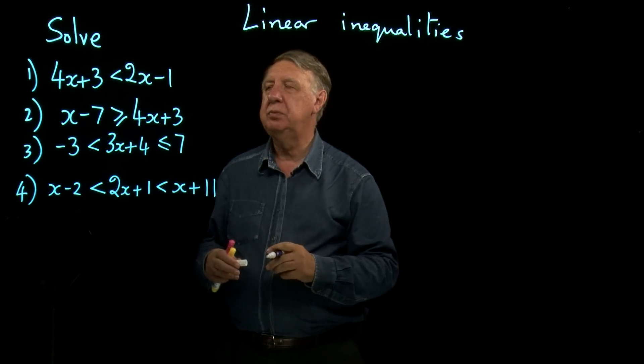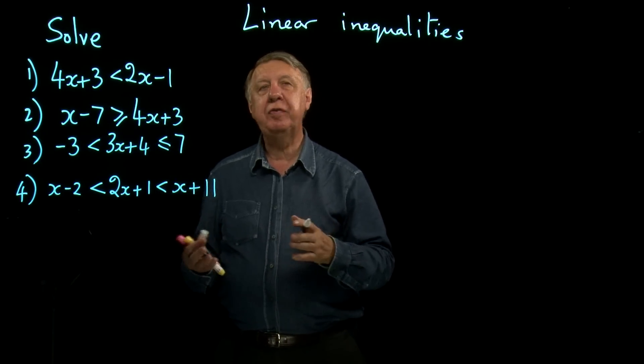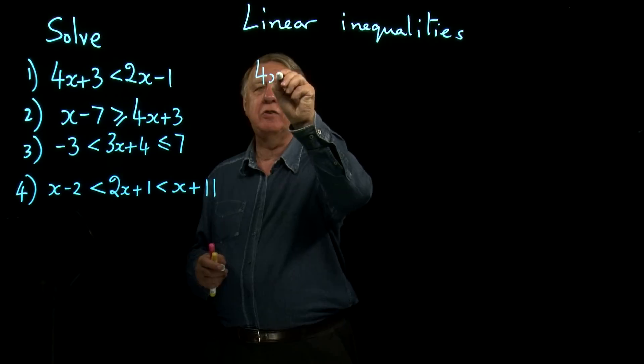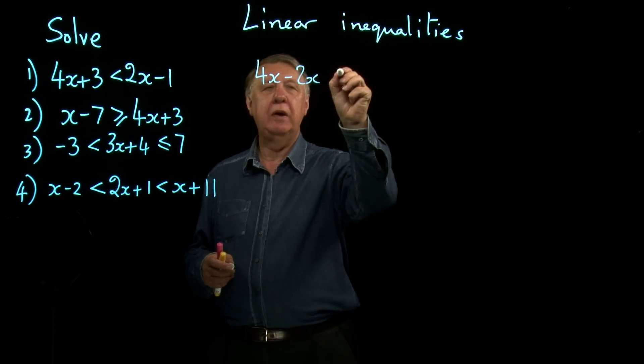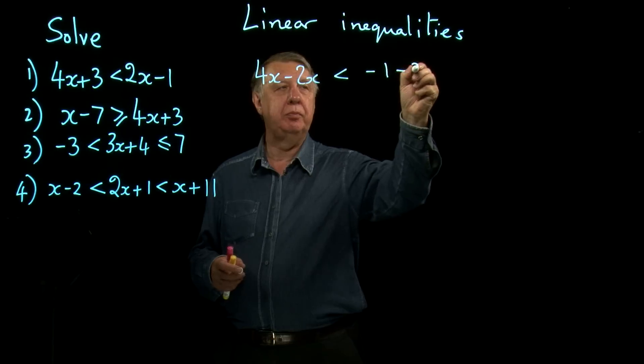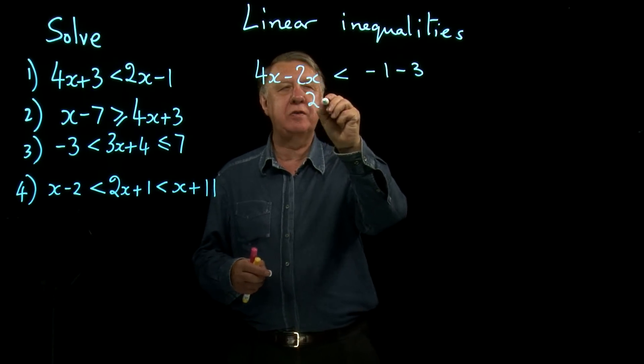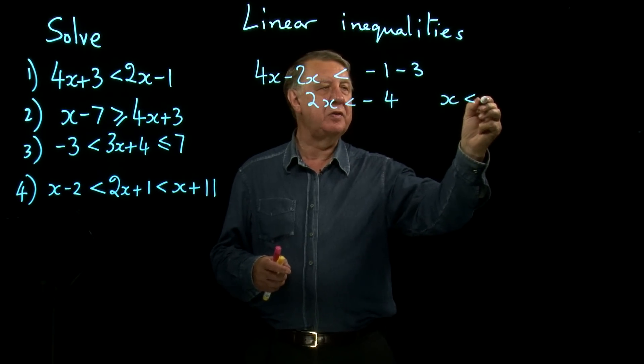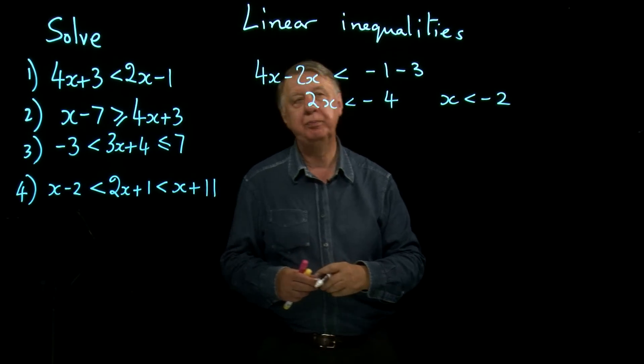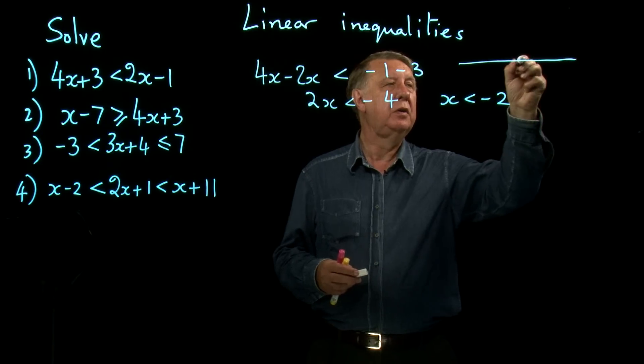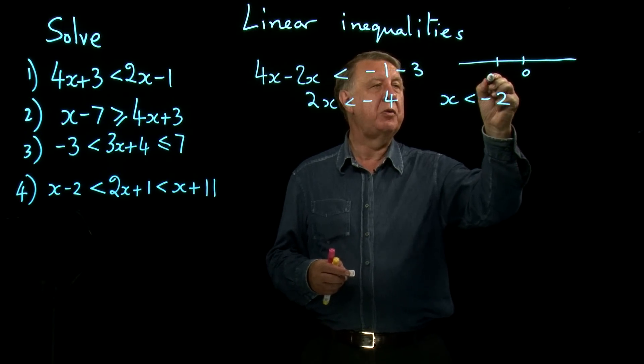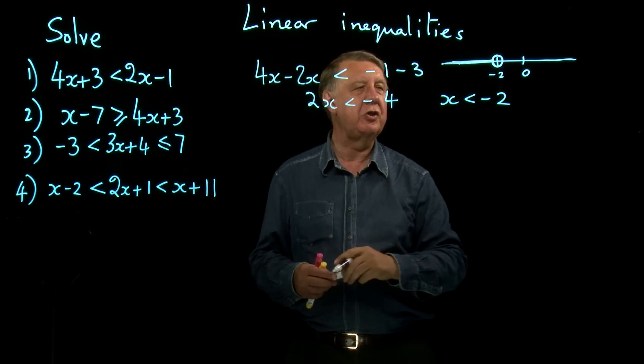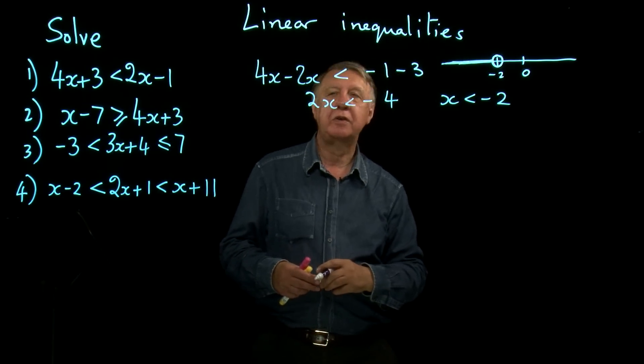The first one here, very straightforward. They behave basically like ordinary linear equations. So if this was an equation here, we would subtract 2x from each side and also subtract 3 from each side. So we'd end up with 2x less than negative 4, divide through by 2, and we have the answer that x is less than negative 2. And if we were looking at a number line, you could represent that by an open circle because negative 2 is not included, and you could shade that back there.